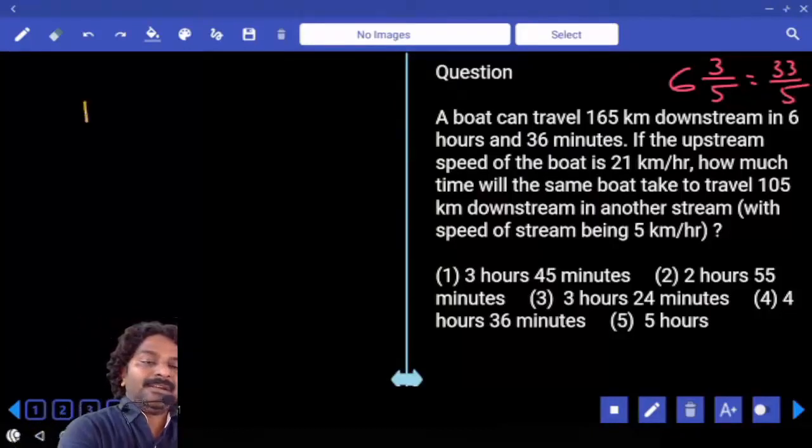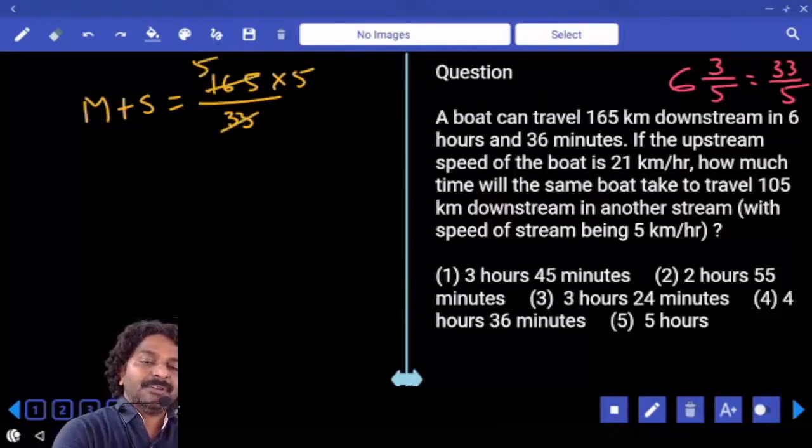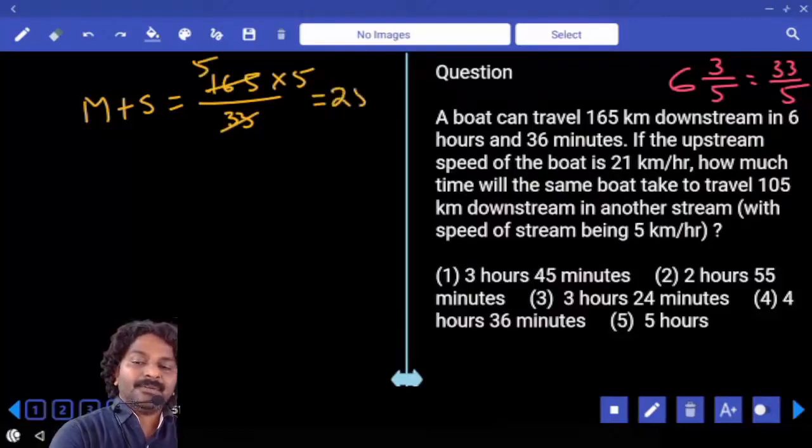Downstream speed is equal to M plus S. 165 by 33 by 5. 5 comes to numerator. 33 how many times? 5 into 5, 25.